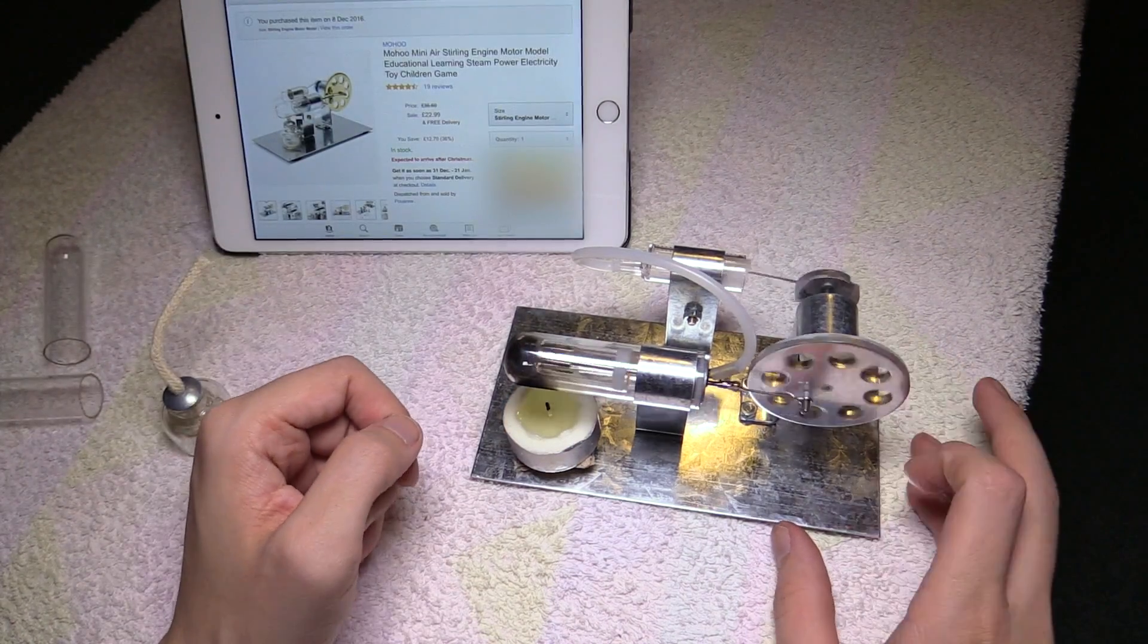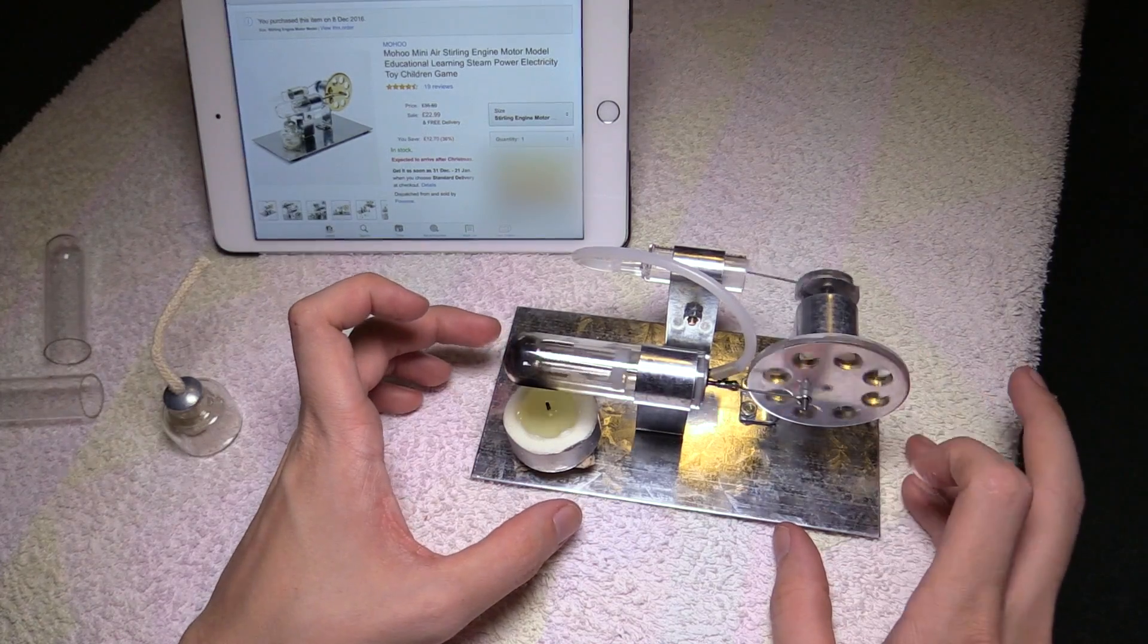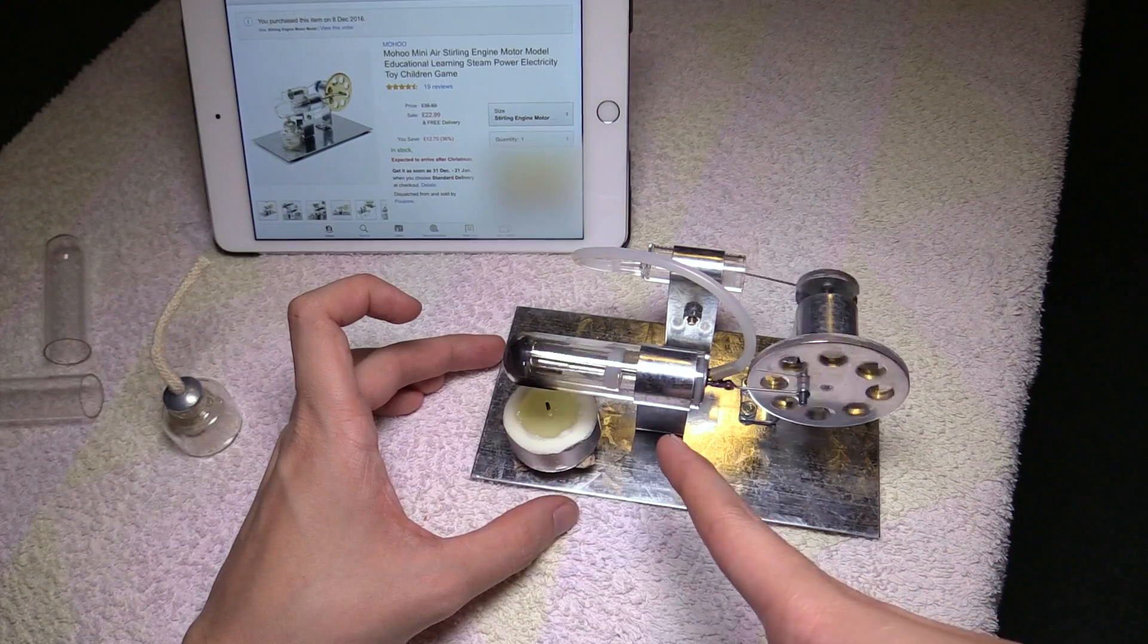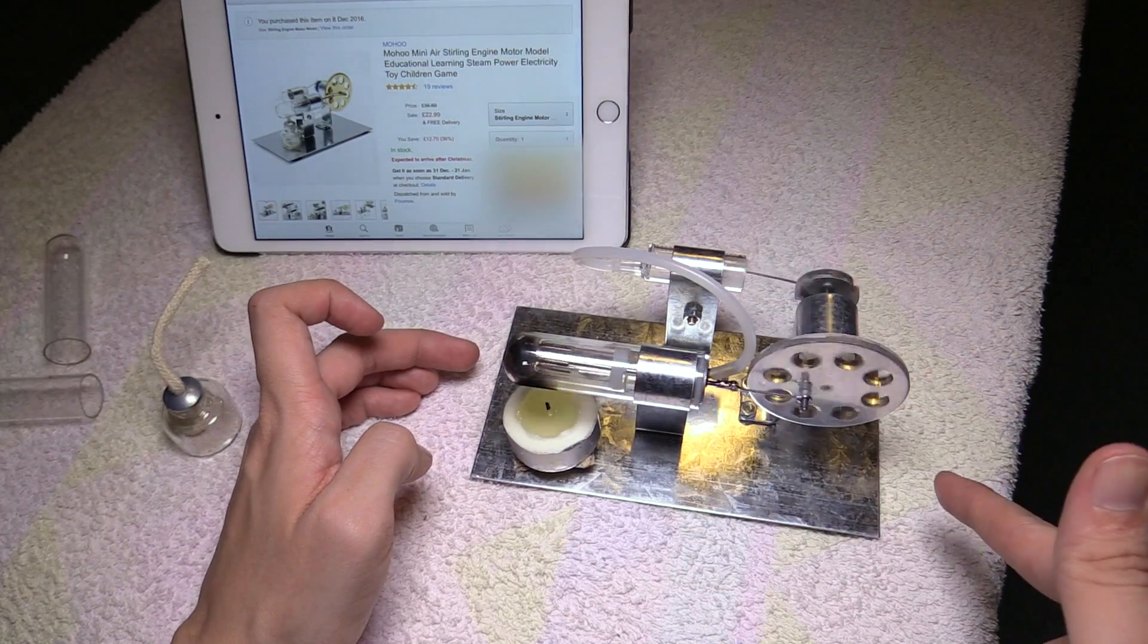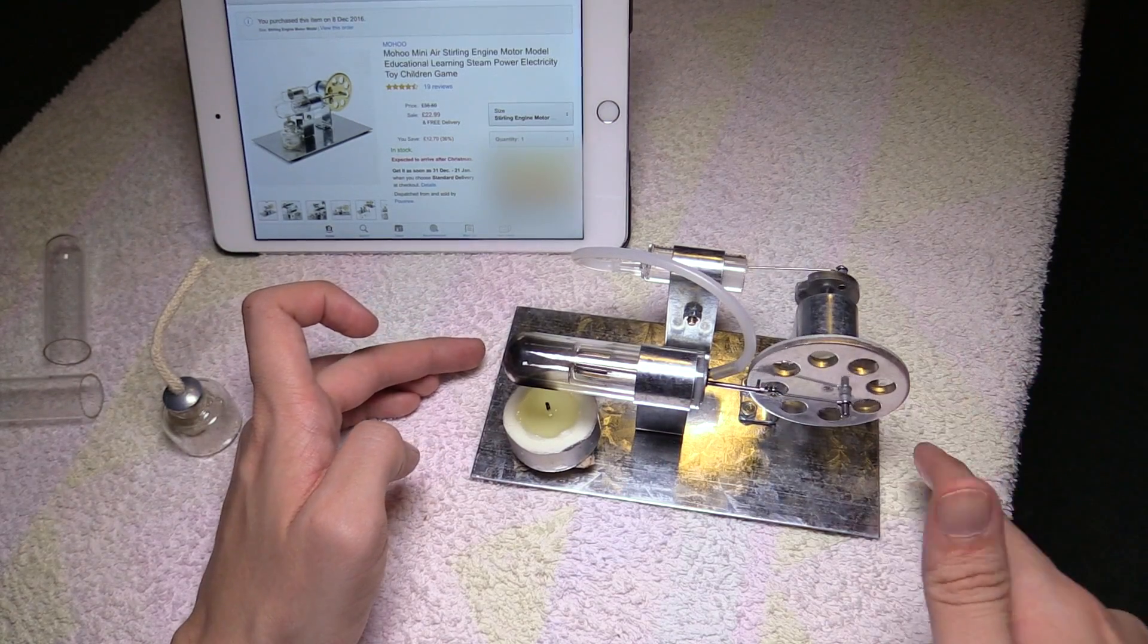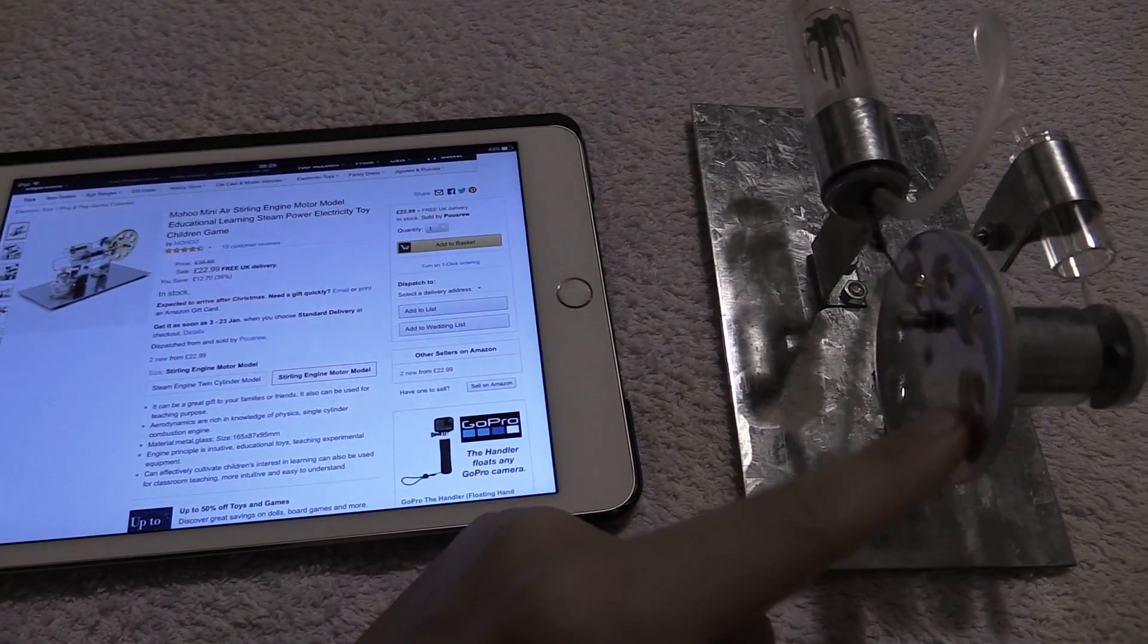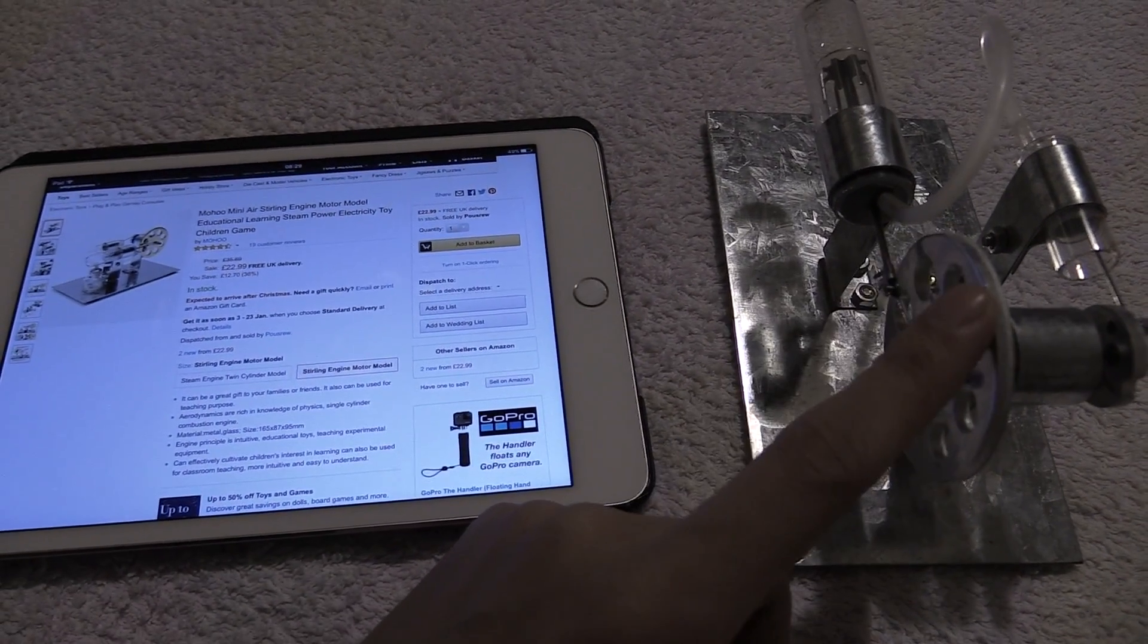Well, if you couldn't tell already, I'm very impressed. Very, very impressed. You can see that now the candle's gone out, it's actually still working a little bit, I guess because the tube is still so hot, but it's not running quite as smooth. Yeah, I'm really, really impressed with that. If you couldn't tell already, I'm very, very impressed with this. It's such a unique gift and it's actually quite easy to put together.